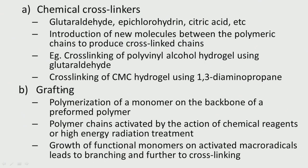Grafting involves the polymerization of a monomer on the backbone of a preformed polymer. We have a polymer, then we introduce another monomer and start polymerizing it. Polymer chains are activated by the action of chemical reagents or high-energy radiation. Growth of functional monomers on activated macro-radicals leads to branching and further cross-linking — that is called the grafting method.